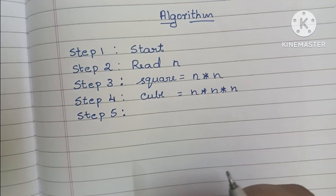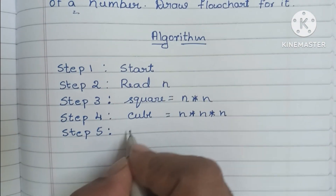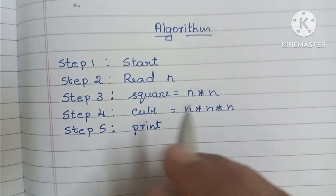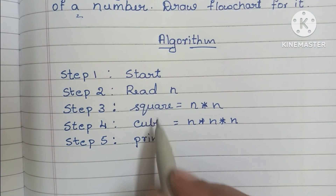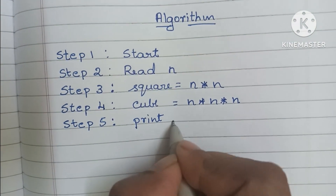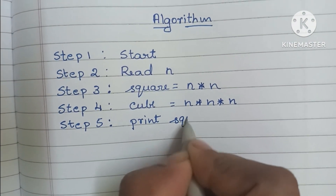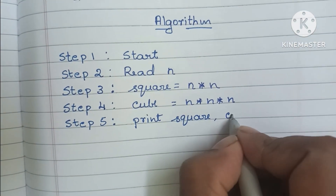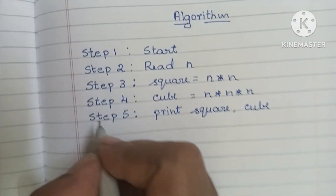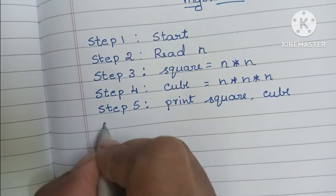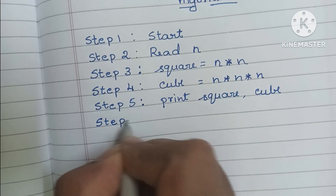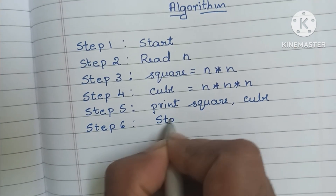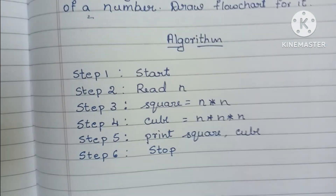In step 5, we have to print the output values. The output values are square and cube, so here we have to print square, cube. Next, in step 6, we have to stop the algorithm using the stop statement.